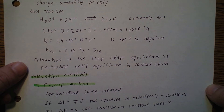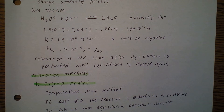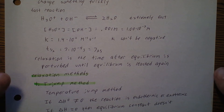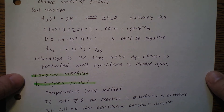Relaxation is the time after equilibrium is perturbed until equilibrium is reached again. We start with a system in equilibrium, change something about the system, and then it ends up at a new equilibrium — a different equilibrium probably. So that's the relaxation time.